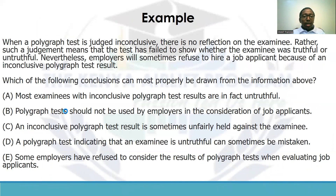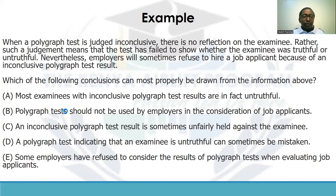So this is our first example — go ahead and pause and try it on your own. Our question says: 'When a polygraph test is judged inconclusive, there is no reflection on the examinee. Rather, such a judgment means that the test has failed to show whether the examinee was truthful or untruthful. Nevertheless, employers will sometimes refuse to hire a job applicant because of an inconclusive polygraph test result.' The question reads: which of the following conclusions can most properly be drawn from the information above? So you are drawing a conclusion from the information — this is an inference question.